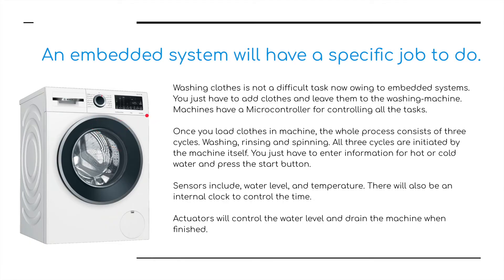The washing machine itself has a microcontroller for controlling all the tasks, with an analog dial and a screen telling you what you're doing. Once you load clothes into the machine, the whole process consists of three cycles: washing, rinsing and spinning. All three cycles are initiated by the machine itself — you just have to enter the information for hot or cold and press the start button. Sensors include water level, to ensure water doesn't overflow, and temperature. There will also be an internal clock to control timing. Actuators will control the water level and drain the machine when it is finished.